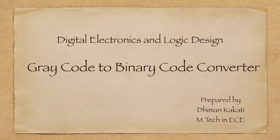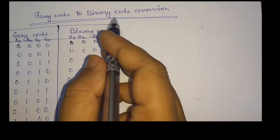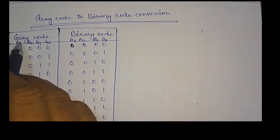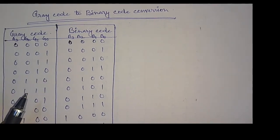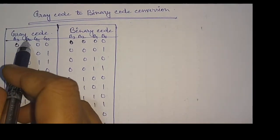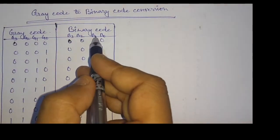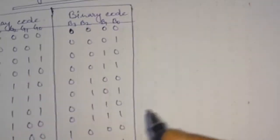Dear students, welcome to this video tutorial series in digital electronics. In today's tutorial we will learn about gray code to binary code conversion. We have made a truth table for gray code to binary code conversion, considering 4-bit gray code with bits G3, G2, G1, G0 and binary code bits B3, B2, B1, and B0.